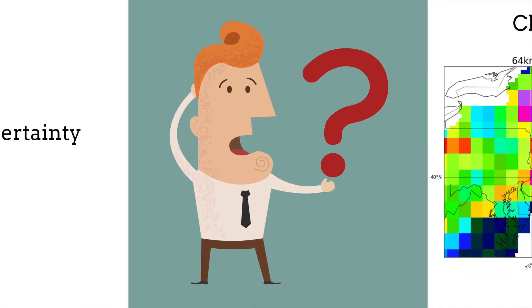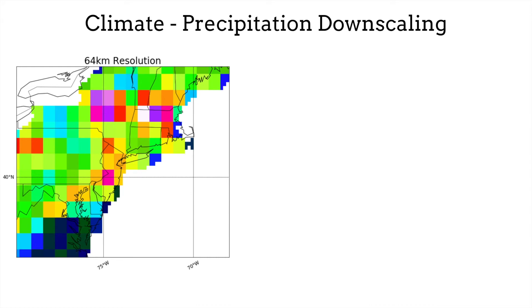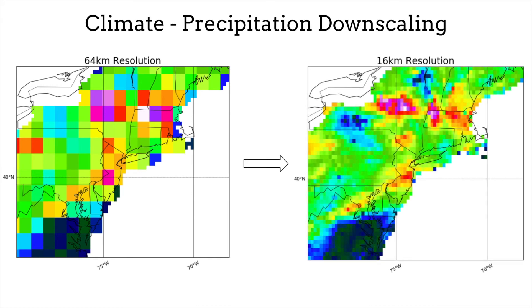For instance, in the problem of statistical downscaling, one wants to generate high-resolution precipitation maps from a coarse resolution projection by learning a functional map between the two. The higher-resolution dataset can then be used to understand the likelihood of localized climatic events in the future.